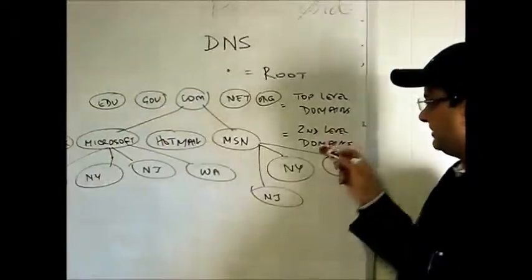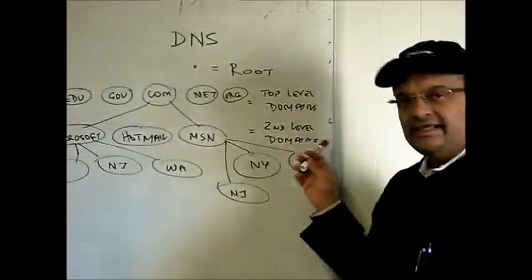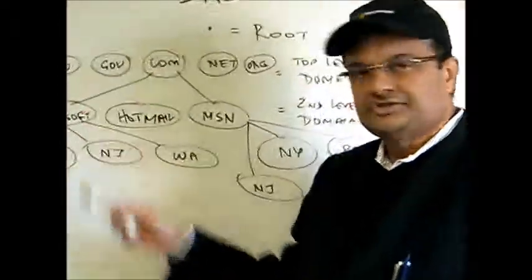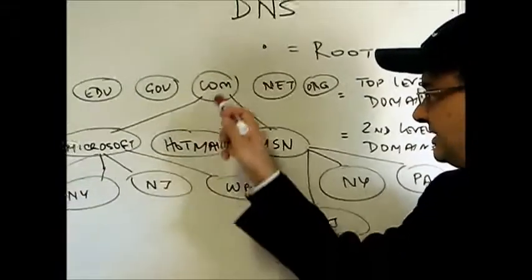Then we have second level domains. Second level domain examples are microsoft.com, msn.com, hotmail.com, and outlook.com.